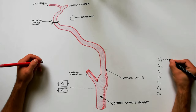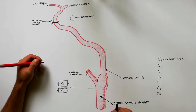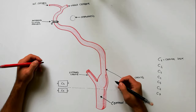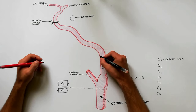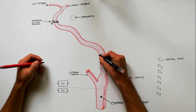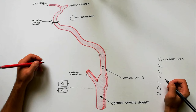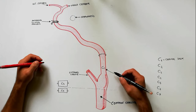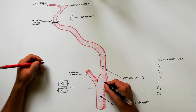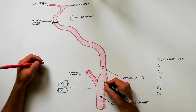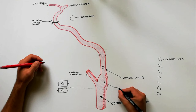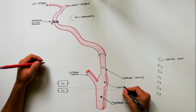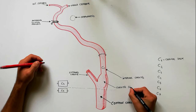The C1 segment, also called the cervical segment, extends from the carotid bifurcation until it enters the carotid canal in the skull. At its origin, the internal carotid artery is somewhat dilated; this part of the artery is known as the carotid sinus. Normally, there are no branches from the C1 segment.